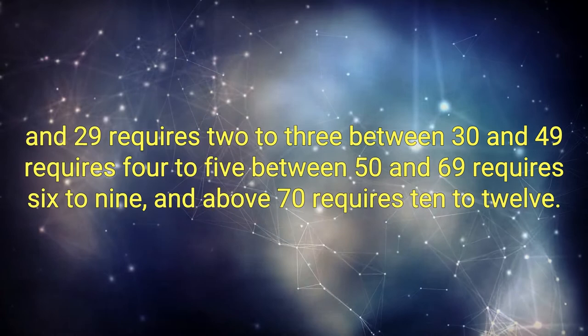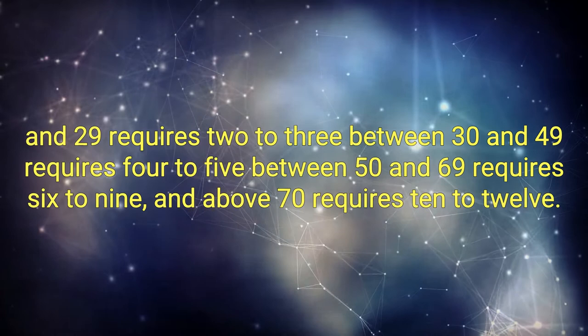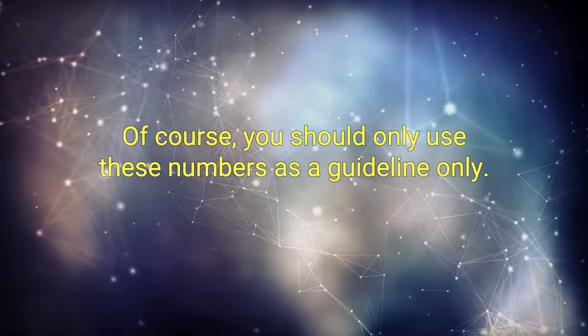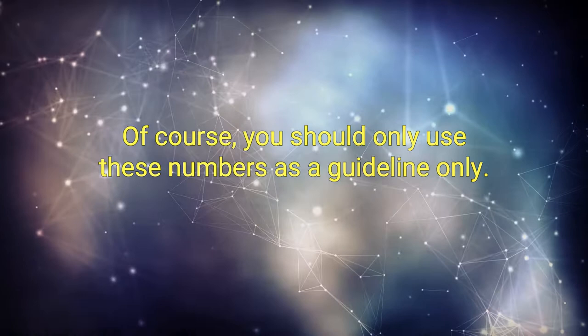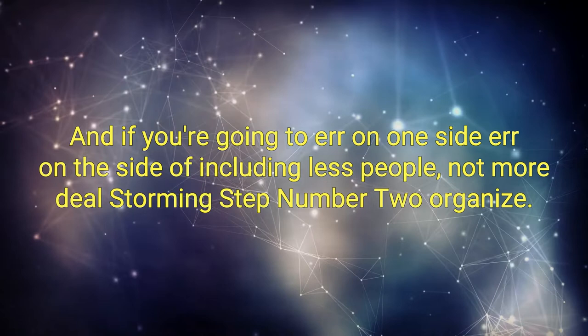Scores below 10 don't require anybody. Between 10 and 29 requires 2 to 3. Between 30 and 49 requires 4 to 5. Between 50 and 69 requires 6 to 9. And above 70 requires 10 to 12. Of course, you should only use these numbers as a guideline only. And if you're going to err on one side, err on the side of including less people, not more.